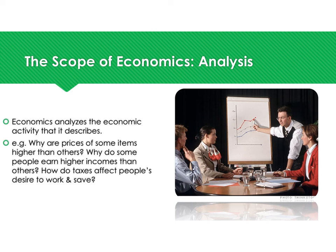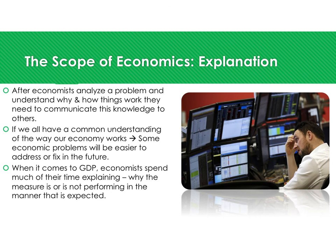Economics also analyzes the economic activity it describes. Why are some items priced higher than others? Why do some people earn higher incomes? How do taxes affect people's desire to work and save? When analyzing primary or secondary sources, an economist must account for the author's individual point of view and bias to provide accurate analysis. Economics also involves explanation — after economists analyze a problem, they communicate that knowledge to others through careful research that attributes ideas to source material so other economists can evaluate and duplicate the work.